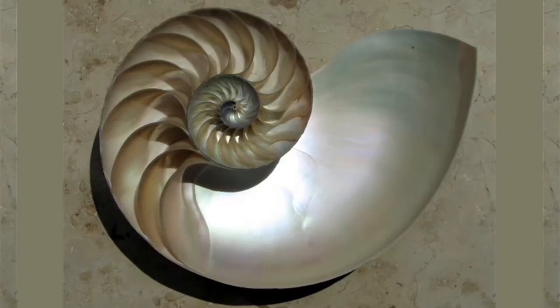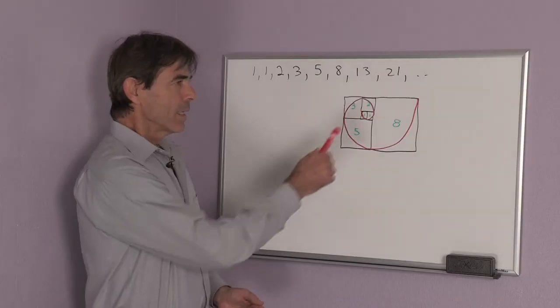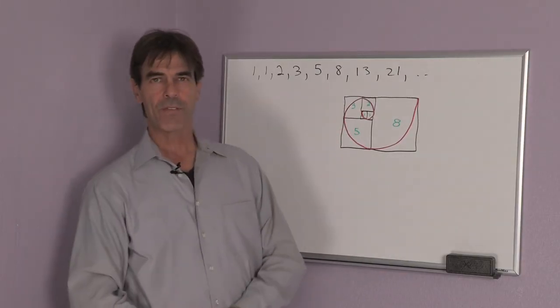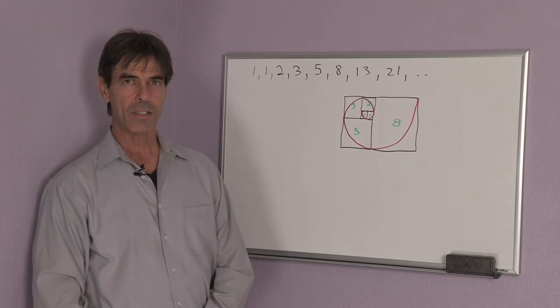For instance, a seashell would have this sort of shape. So these numbers are very interesting and there's a lot of things you can do with them.